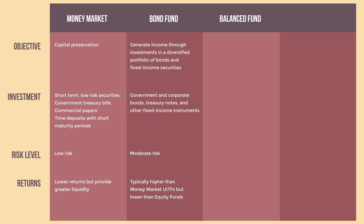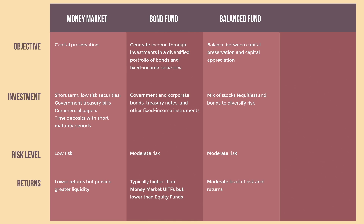Balanced Fund UITF — its aim is to strike a balance between capital preservation and capital appreciation. They are designed for investors seeking a moderate level of risk and returns. These funds invest in a mix of stocks and bonds to diversify risk. The allocation between stocks and bonds varies but is typically predetermined by the fund manager. Balanced Fund UITFs are moderately riskier than Money Market and Bond funds due to their equity component, and they aim for a middle ground between safety and growth.